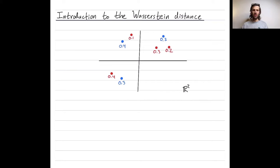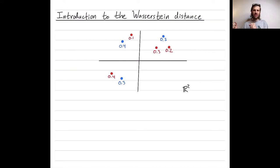Let's start not with measures with infinite support, but with measures with finite support. I have two measures here, defined on the plane. They both have finite support. The blue measure has support which is these three points; the red measure has support which is these four points. The label on each point tells you how much mass there is at that point. The one Wasserstein distance between these two measures is going to be determined by an optimal transport plan.